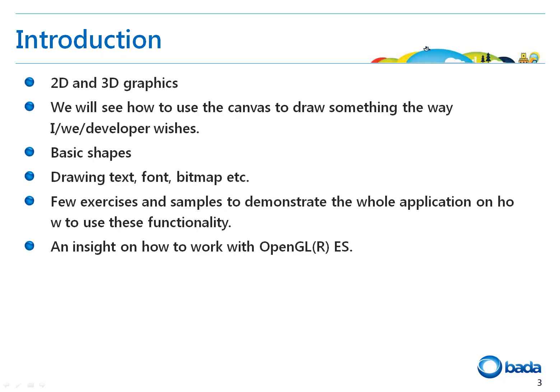I'm going to talk about 2D and 3D graphics. 2D can be achieved using a canvas, and for 3D we'll talk briefly about OpenGL. We'll also look at the use of basic geometrical shapes such as circles, triangles, etc., which can be drawn on the canvas. Then we'll look at how to draw images, text, and fonts. I also have some examples to demonstrate these features in small applications, and finally we'll take a look at OpenGL ES.